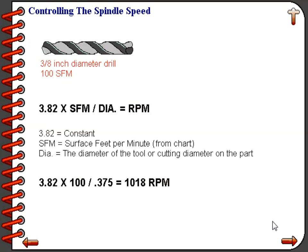Now we will move on to using the real numbers. RPM = 3.82 × 100 ÷ 0.375, and that gives us 1018 RPM. You may come up with an unusual number such as 1018.667 — don't worry about those extra numbers. RPM and SFM are always programmed using whole numbers, so anything after the decimal point we can simply eliminate from our value.